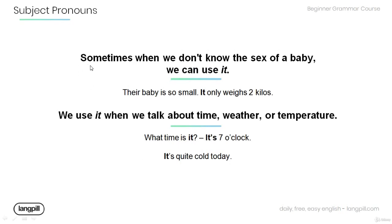Sometimes when we don't know the sex of a baby we can use 'it'. For example: 'Their baby is so small, it only weighs two kilos.' We also use 'it' when we talk about time, weather, or temperature.